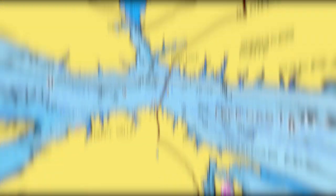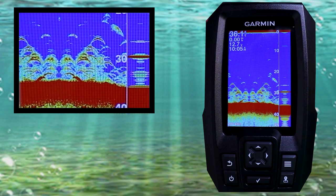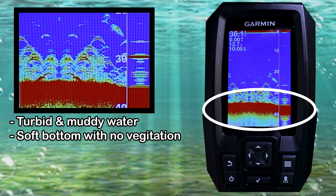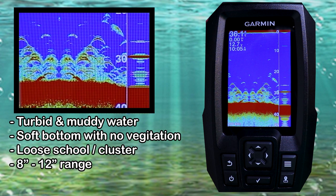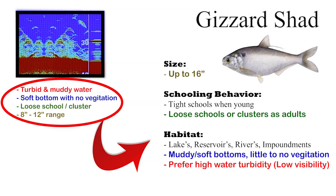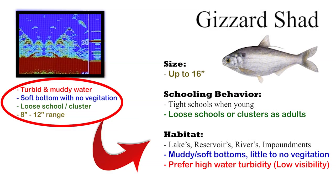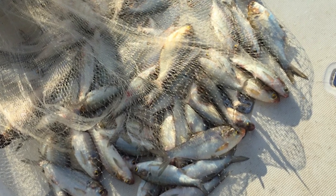Our first sonar image comes from an upper creek arm off a large lake. The water is somewhat muddy and turbid, the bottom is rather soft, and there is no vegetation present. The fish in this image appear to be in a loose school or cluster. Judging by the strength and size of these returns, this isn't an overly large fish but also not a very small fish — probably something in the 8 to 12 inch range. Through interpreting our surroundings and what we see on the sonar screen, we can make a pretty educated guess that this is most likely gizzard shad. And if we throw out our cast net, you'll see we're correct — these indeed were gizzard shad.